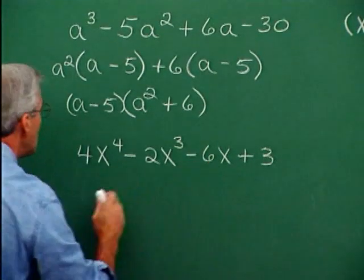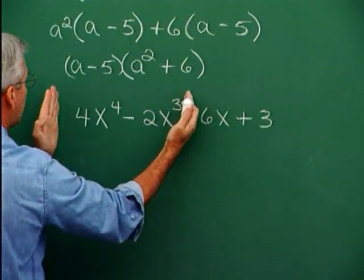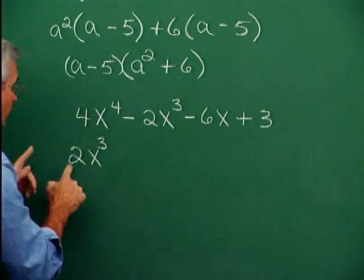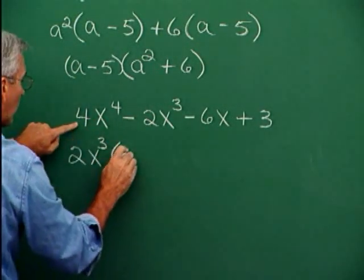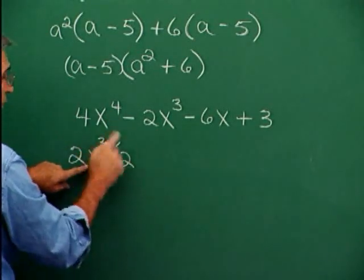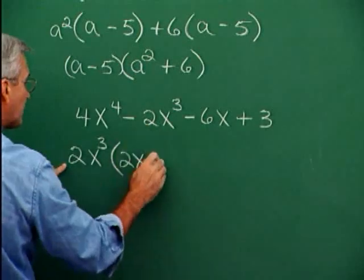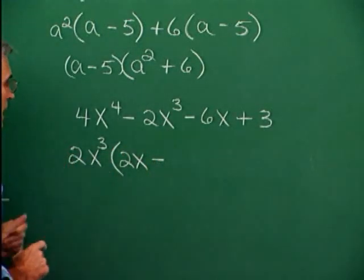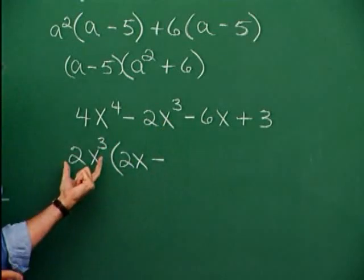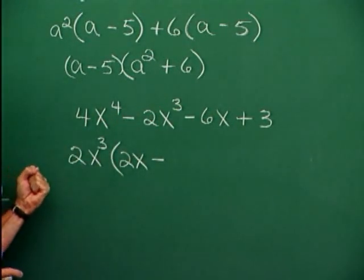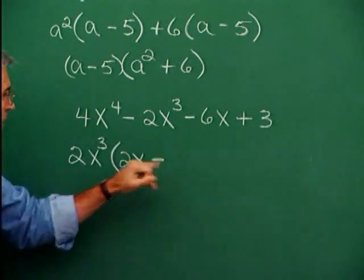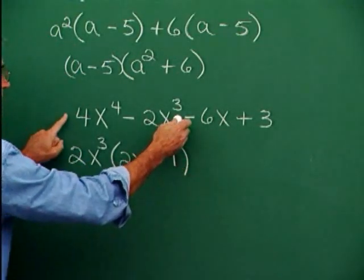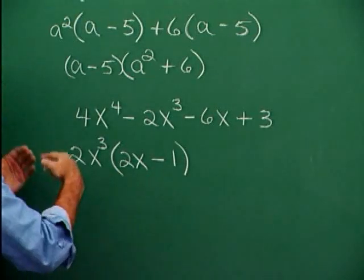Let's go through the process again on this next example — factoring by grouping. For the first group, 4 and 2 share a common factor of 2, and x to the 4th and x cubed share x cubed, so I pull 2x cubed out of these two terms. Pulling 2 out of 4 leaves 2, and x cubed out of x to the 4th leaves x. Pulling 2 out of 2 leaves no numerical part, and x cubed out of x cubed leaves nothing — so I need to write a 1 there. For the second group, the common factor is only 3, and 3 out of the second term leaves minus 2x. When I pull the 3 out completely, I'm left with a 1.